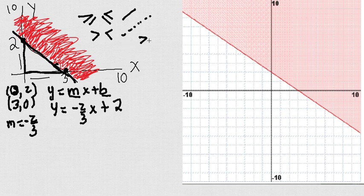Moreover, remember, when it's greater or equal, I'm going to shade above the line. When it's less or equal, I'm going to shade below the line. In this case, I'm actually shading above the line. So, this has to be y is greater or equal than negative 2 over 3x plus 2.